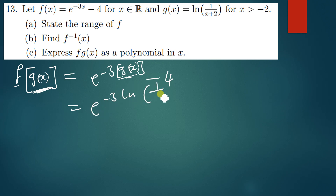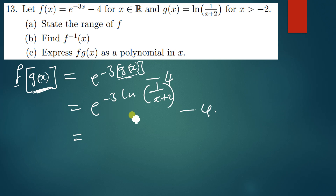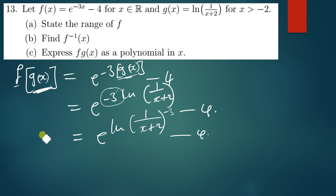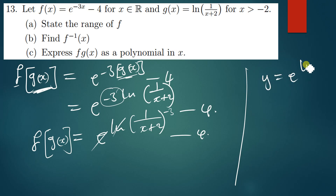So we have e to the power negative 3 times ln(1 over (x+2)), minus 4. Here it's just a matter of simplifying the expression. What you do first is bring negative 3 as a power inside the logarithm, so we have e to the power ln((1 over (x+2)) to the negative 3), minus 4. Let me prove that e and ln cancel each other.